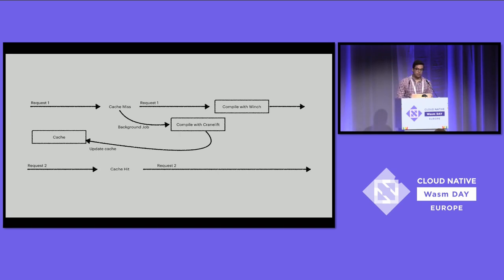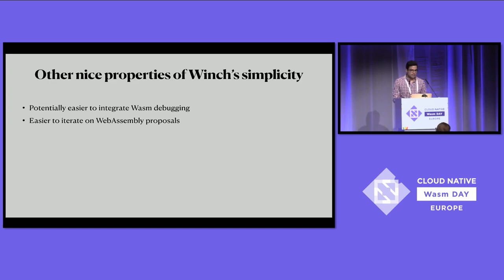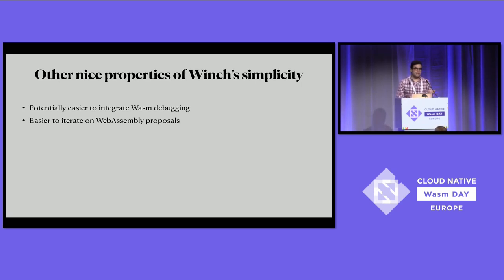You could do this while there is no automatic tiering in WasmTime — automatic tiering is something we haven't planned yet, but the idea is that all this would be done by the runtime itself, which is what happens in browsers today. Other nice properties of Winch's simplicity: it's potentially easier to integrate WASM debugging, since all the transformations in CraneLift make it really difficult to trace machine code back to the original source. And it's also easier to iterate on WebAssembly proposals — Winch is very simple, so supporting a new proposal is faster than doing all the necessary steps in CraneLift.